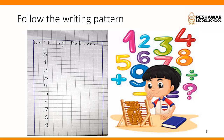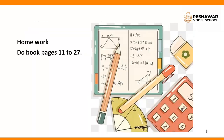Now here we have the writing pattern from 0 to 9. When you are writing the counting you must follow the writing pattern which I have given to you. Next is your homework. I hope that you are able to do your homework independently without any help. These are your homework pages — you have to do your homework on your textbook, pages 11 to 27. That's all for today, thank you.